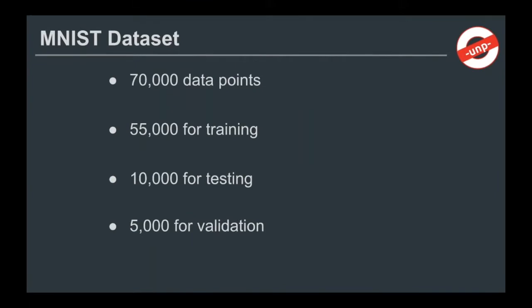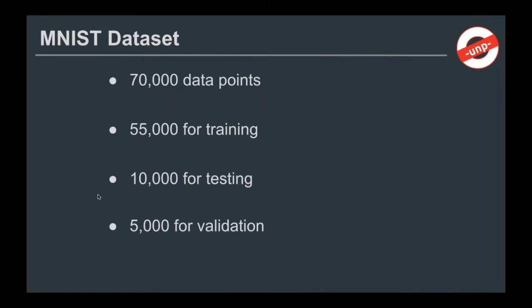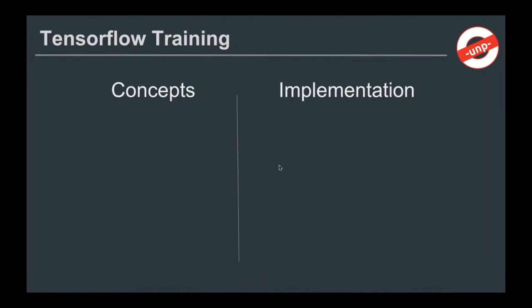In this dataset there are 70,000 data points in total — 70,000 images in total. Each of these images is a 28 by 28 grayscale image of a particular digit. I have 55,000 of those images for training, 10,000 for testing, and 5,000 for validation. We will only utilize the training set for building our neural network and the testing set.